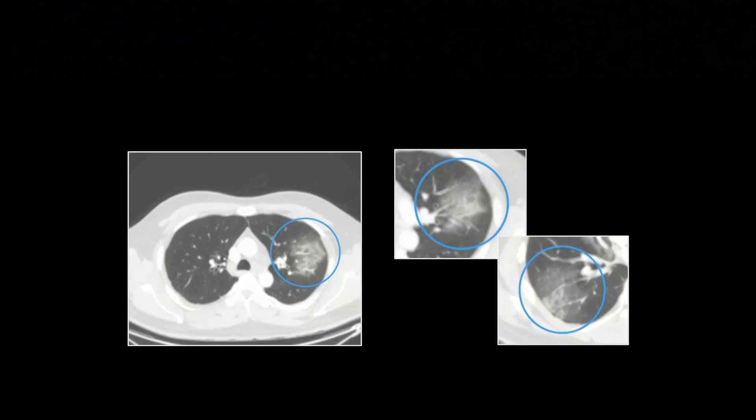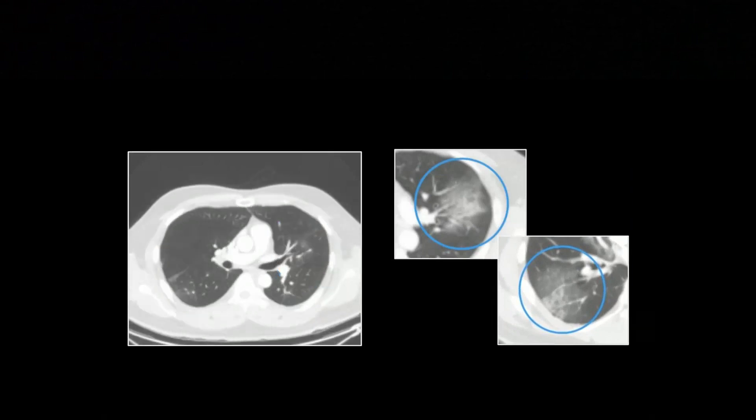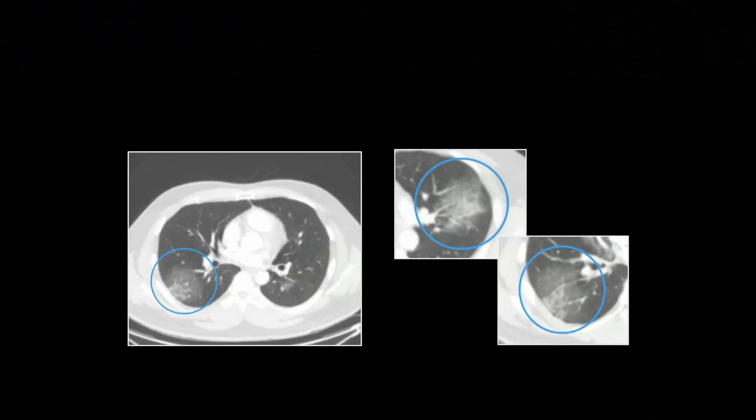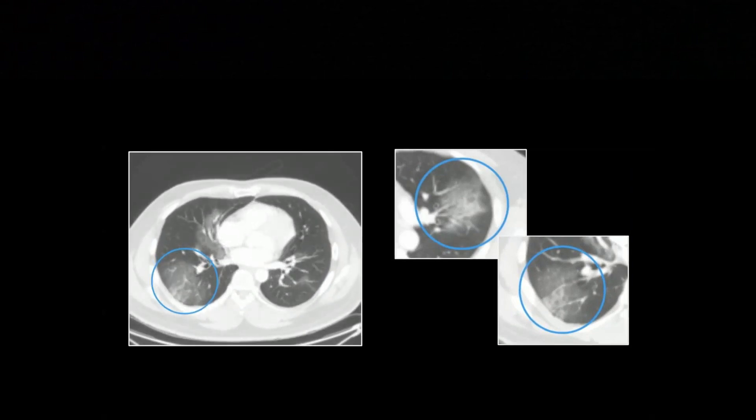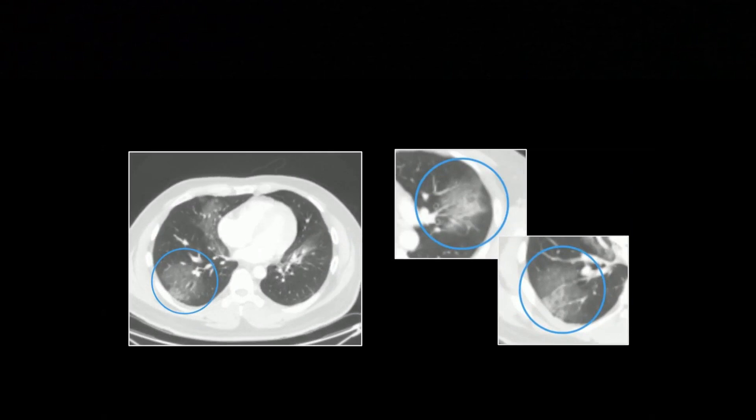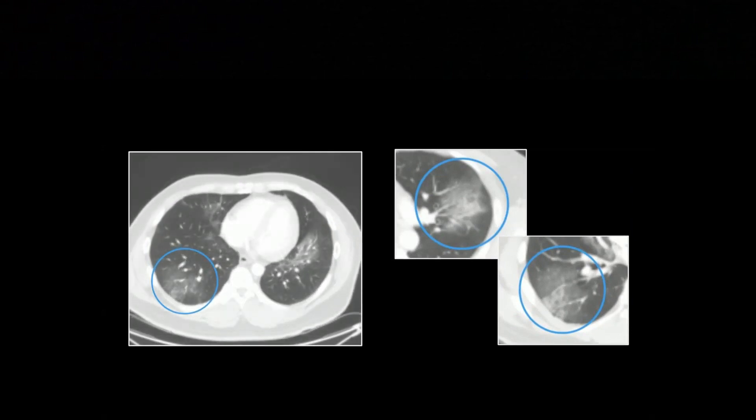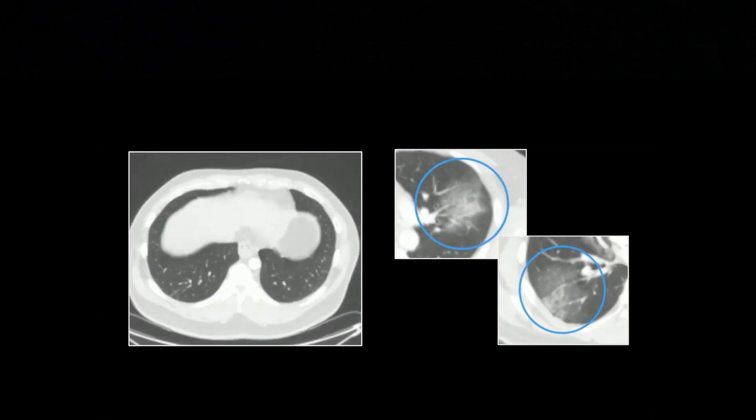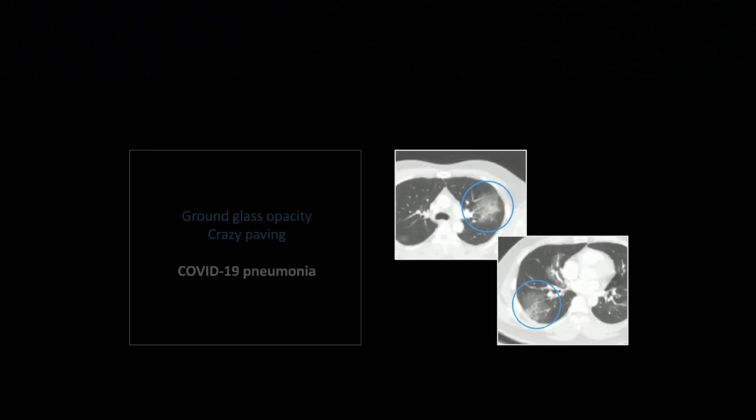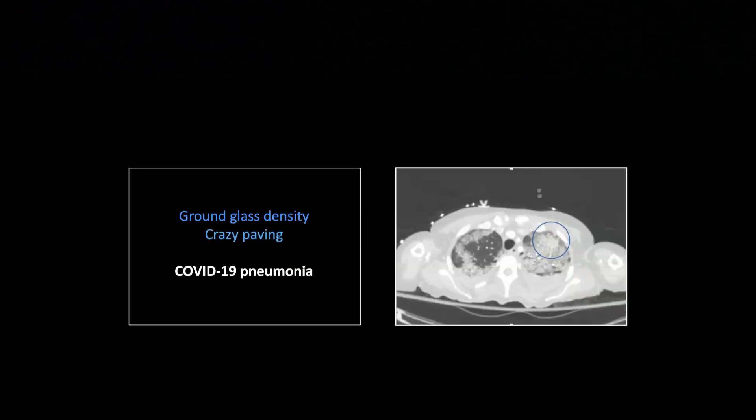It's bilateral, rounded, and peripheral in location. See how it goes out to the pleural edge there in both cases? There are a bunch of other patches of ground glass density elsewhere in the lungs. That's one of the first cases of COVID to hit the country. That actually came from the Bay Area.